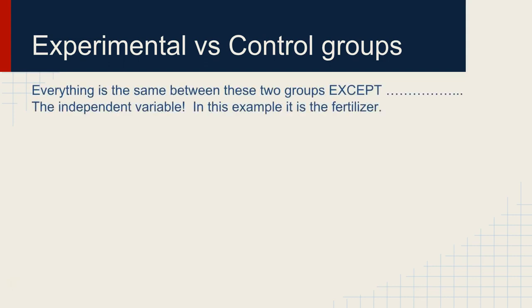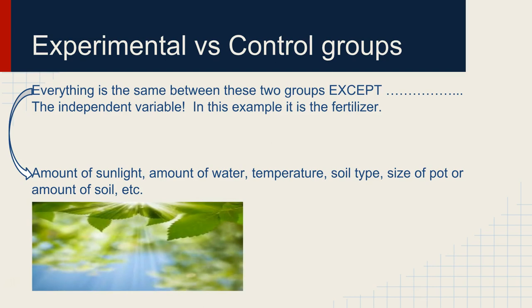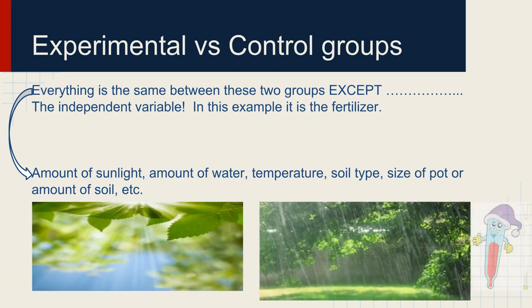Now between these two groups, everything is the same, except for the independent variable. So that means that we have to have the same amount of sunlight, the same amount of water, temperature, size pot, soil, all the things need to be the same. The only difference is that one group got the fertilizer, and one group did not.